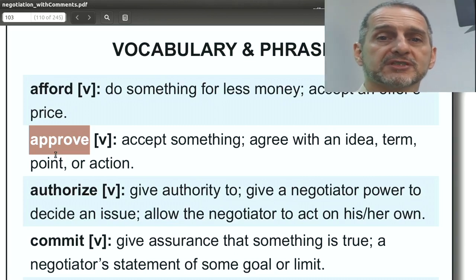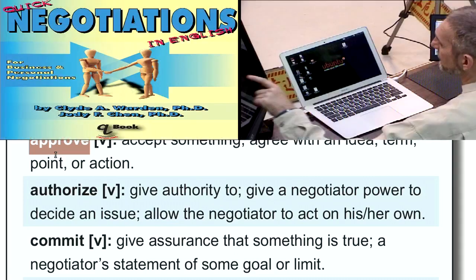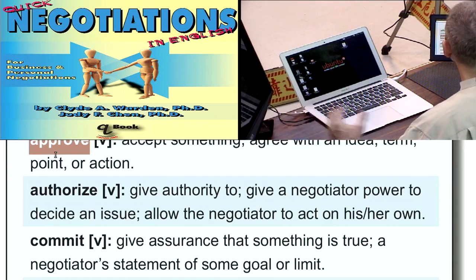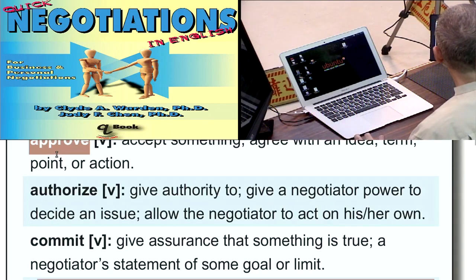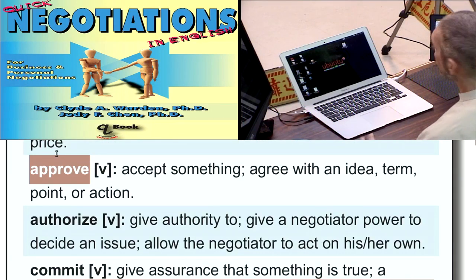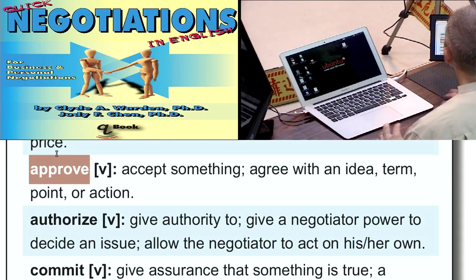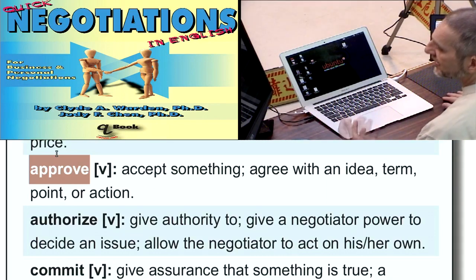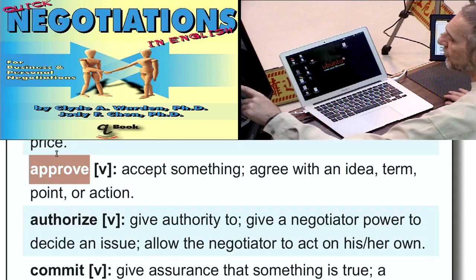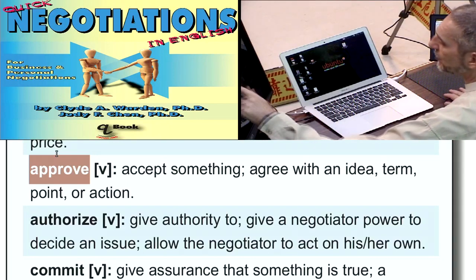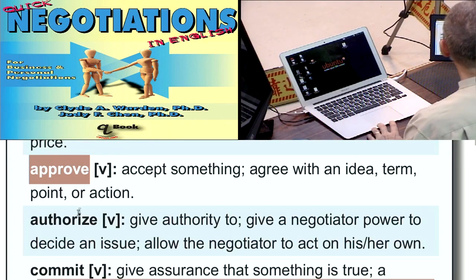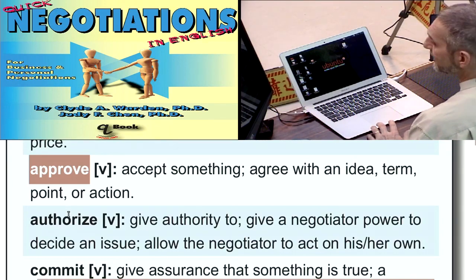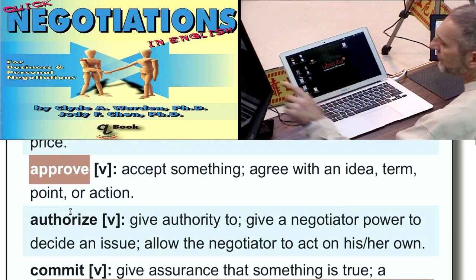Approve, of course, is something you agree with and something you're going to go along with. You use this in your negotiation to tell the other side that you approve or you don't approve. It's very normal to say we cannot approve, or my manager cannot approve this, or my company cannot approve this, so that it's not personal — it doesn't sound like a personal issue. Approve can be positive, or with a not approve, it can be negative.